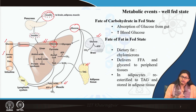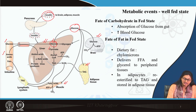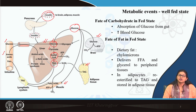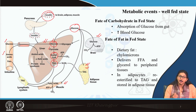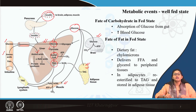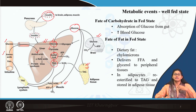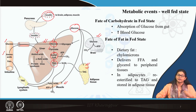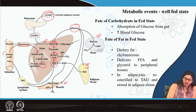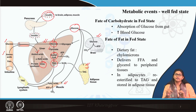Liver glucose undergoes glycolysis to form pyruvate, which forms acetyl-CoA. Acetyl-CoA can form triacylglycerol, which is circulated to different tissues for storage — most importantly adipose tissue. Dietary amino acids are mostly utilized for protein synthesis, replenishing proteins depleted during the glucose-alanine cycle. Excess amino acids undergo deamination and are excreted as urea. This is the metabolic condition in the well-fed state.